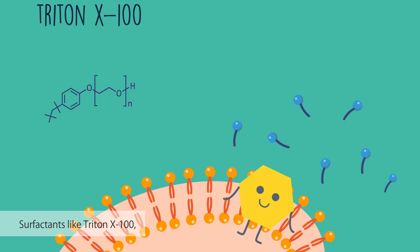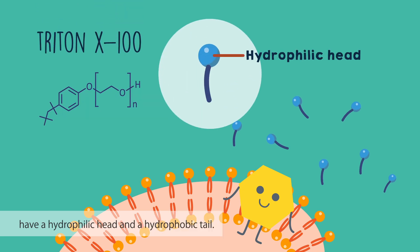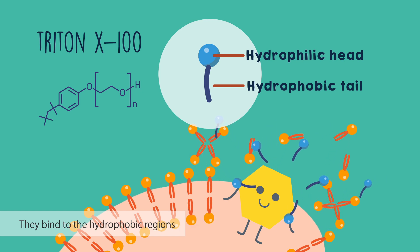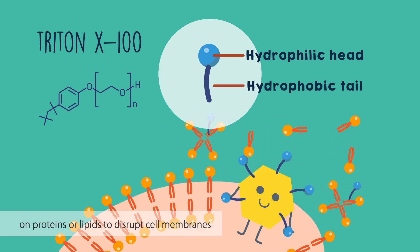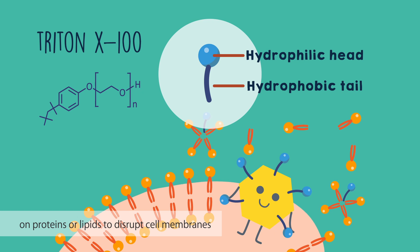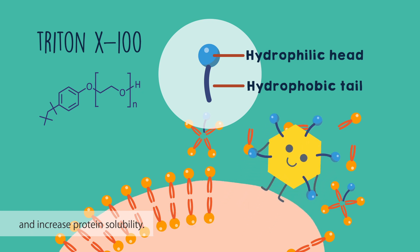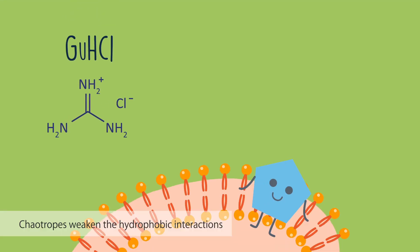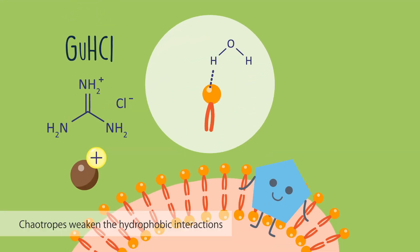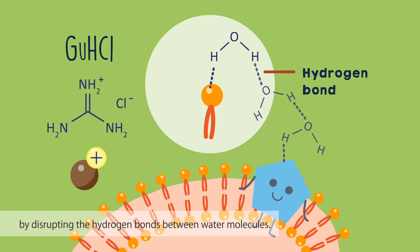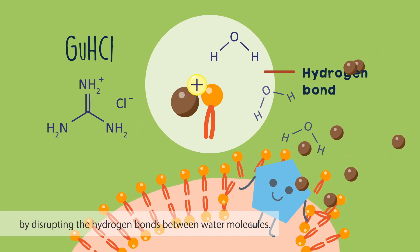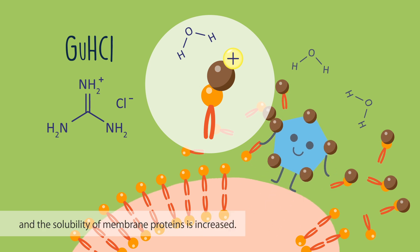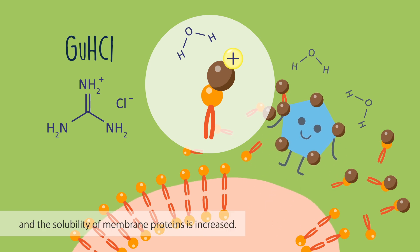Surfactants, like Triton X100, have a hydrophilic head and a hydrophobic tail. They bind to the hydrophobic regions on proteins or lipids to disrupt cell membranes and increase protein solubility. Chaotropes weaken the hydrophobic interactions by disrupting the hydrogen bonds between water molecules. As a result, the cell membranes collapse and the solubility of membrane proteins is increased.